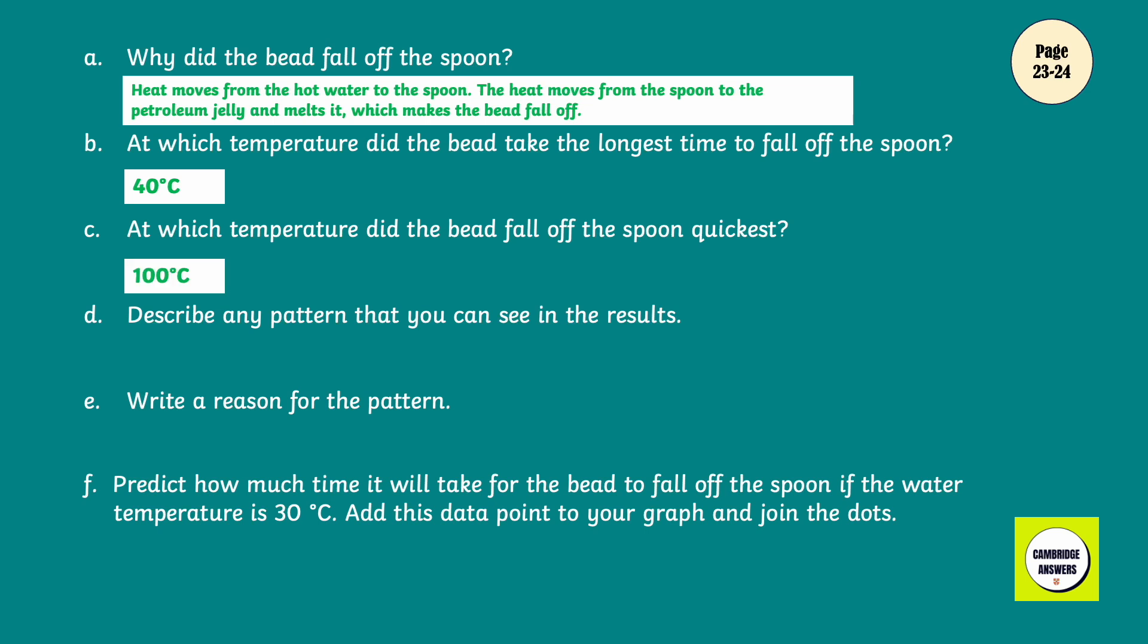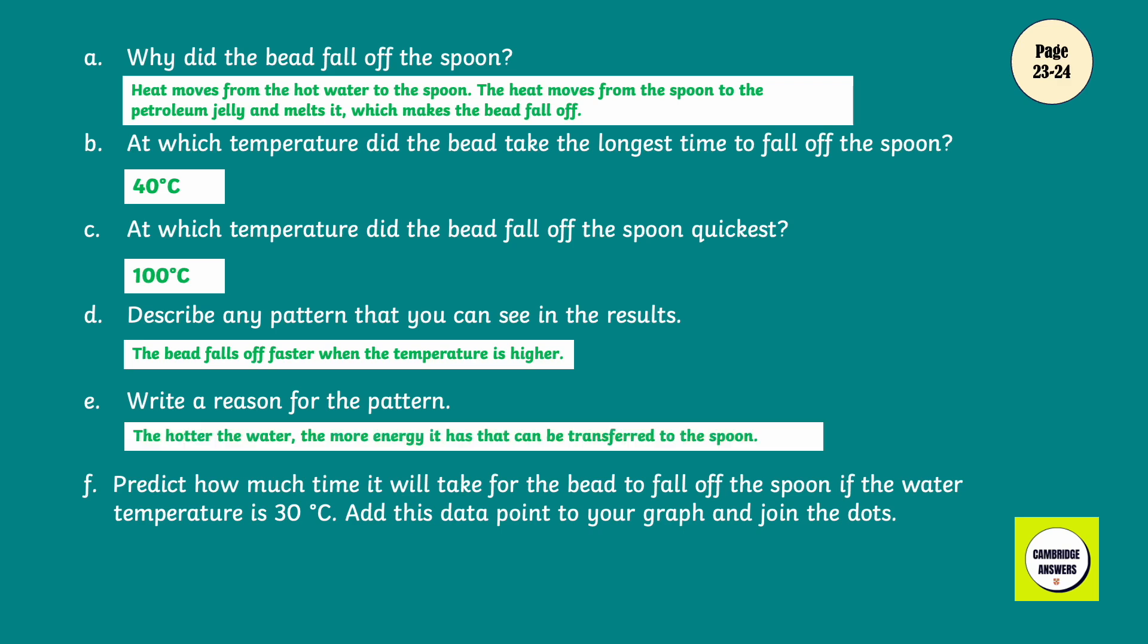Describe any pattern that you can see in the results. The bead falls off faster when the temperature is high. Write a reason for the pattern. The hotter the water, the more energy it has that can be transferred to the spoon. Predict how much time it will take for the bead to fall off the spoon if the water temperature is 30 degrees Celsius. Add this data point to your graph and join the dots. It can take 13 to 15 minutes. This data point can be added to the graph.